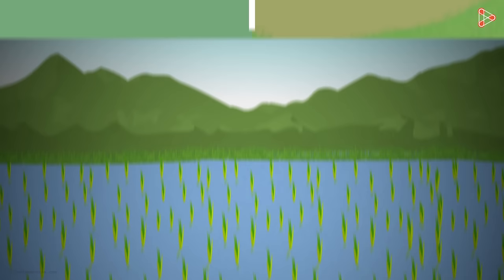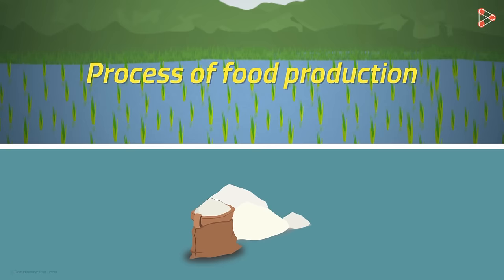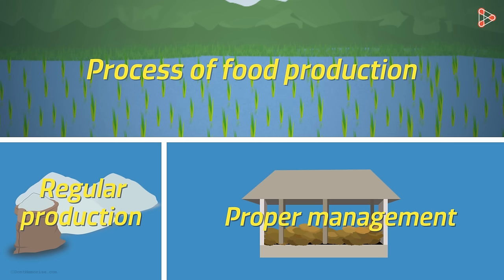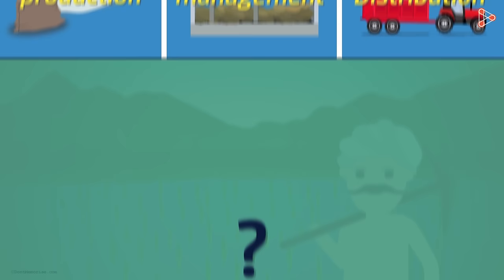A lot of effort goes into the process of food production. One of the things this process includes is regular production of food. Secondly, proper management of the resources produced. And lastly, fair distribution among the people.